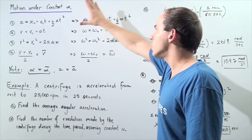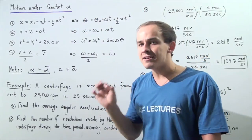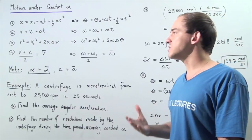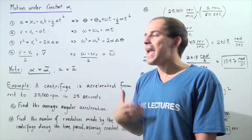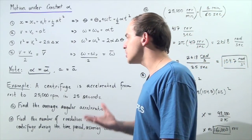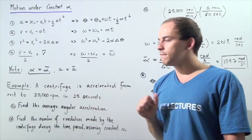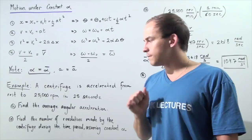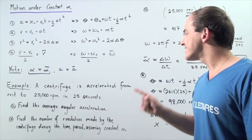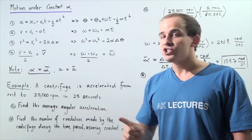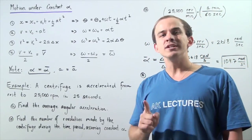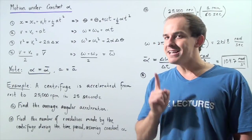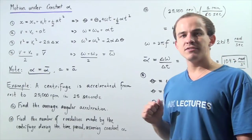So we can basically use these four angular motion kinematics equations to help us solve various types of problems involving angular or rotational motion. For example, suppose that a centrifuge is accelerated from rest to a frequency of 25,000 revolutions per minute in an interval of 25 seconds.